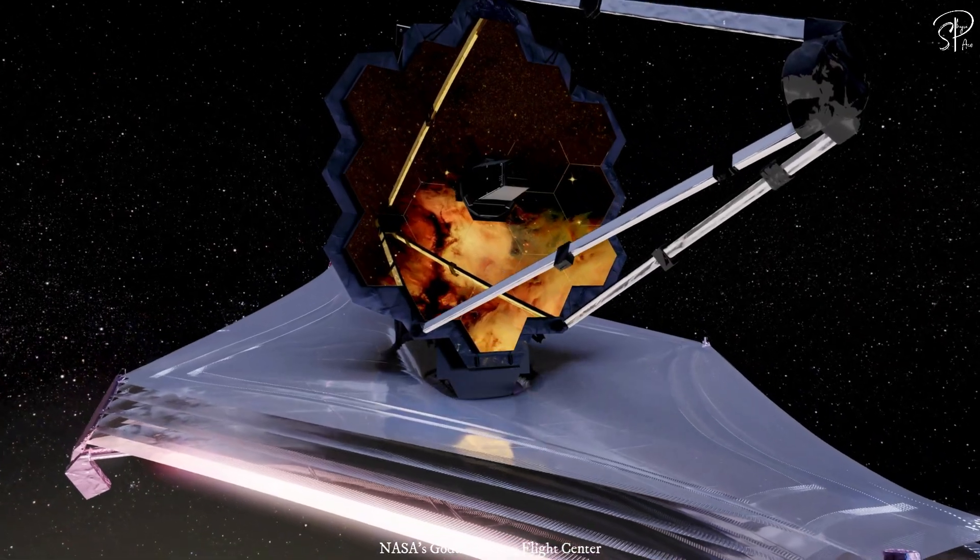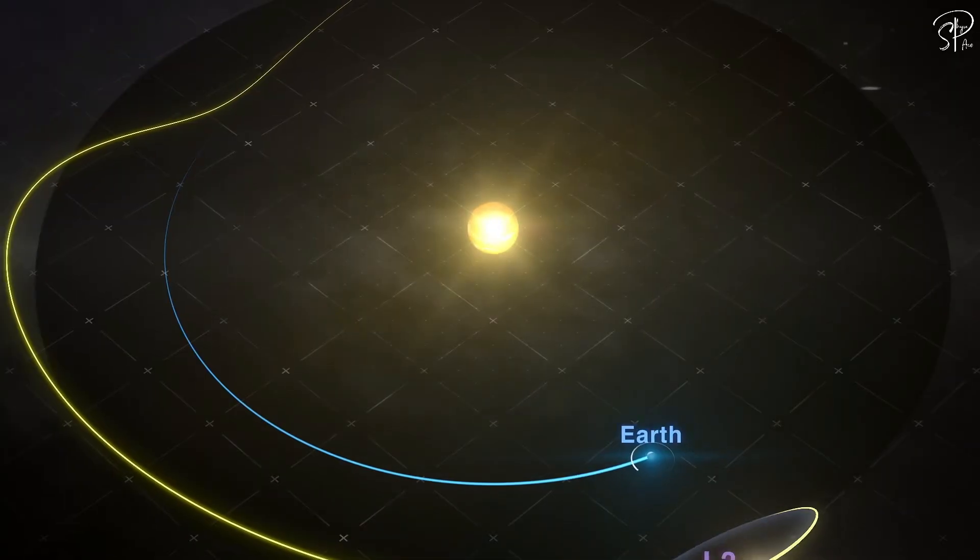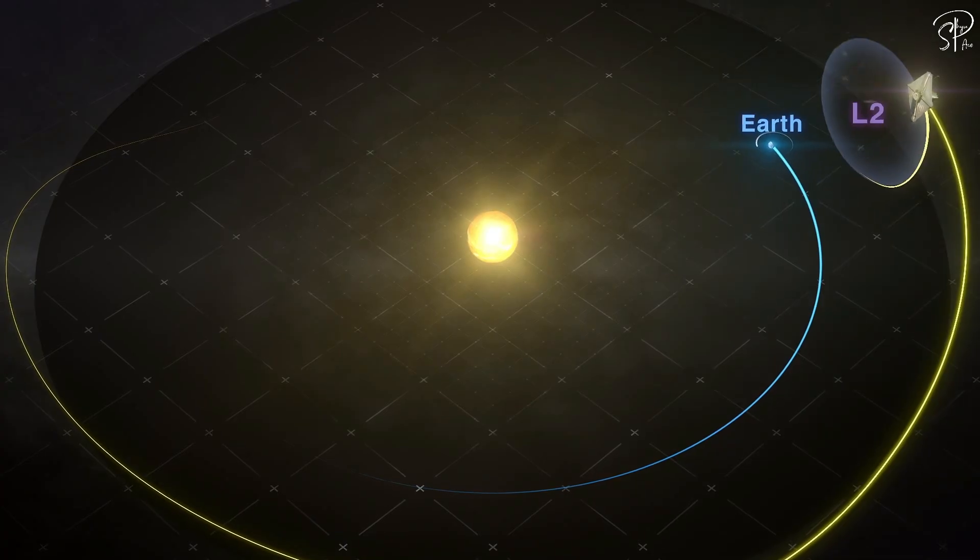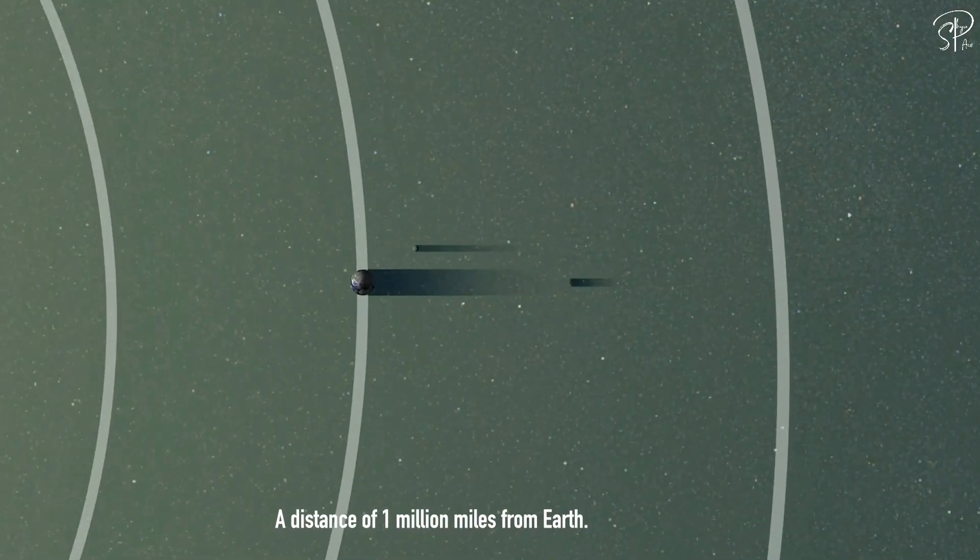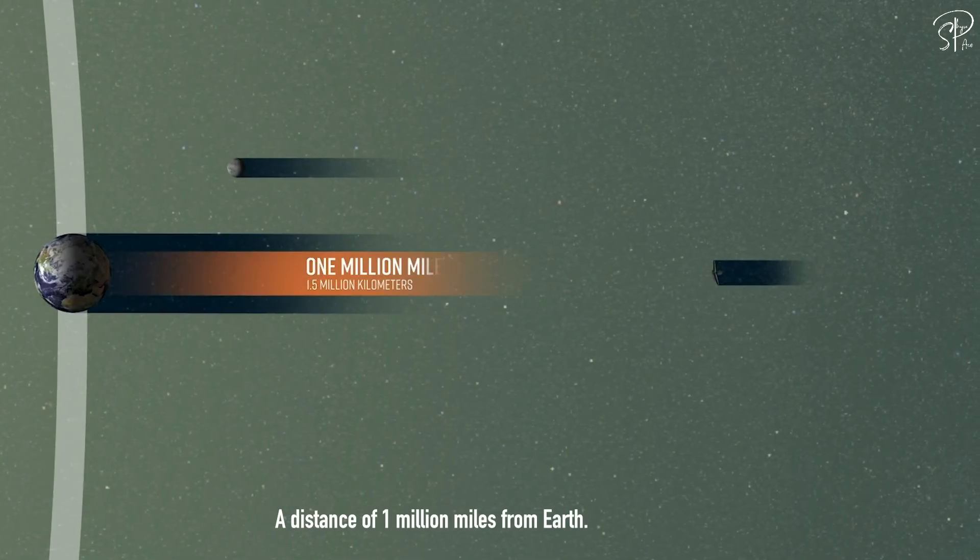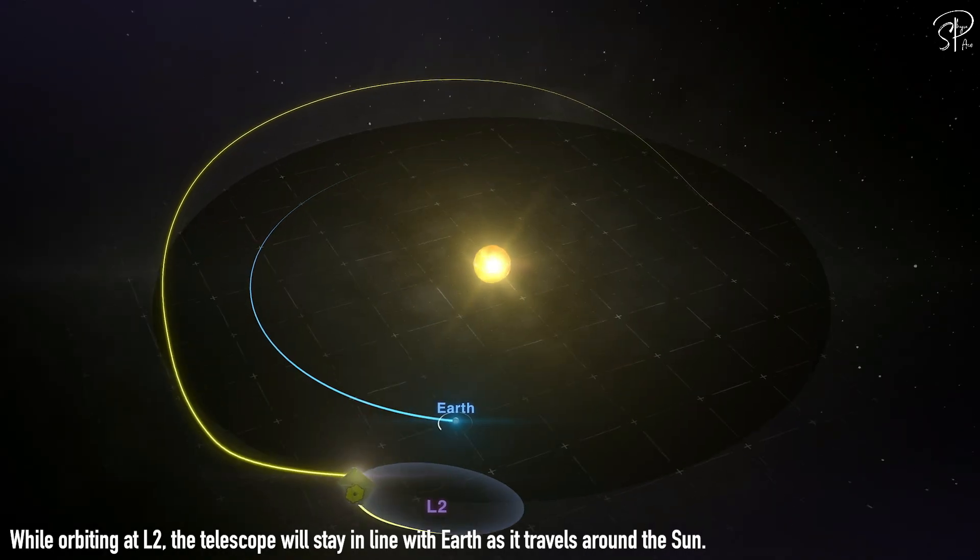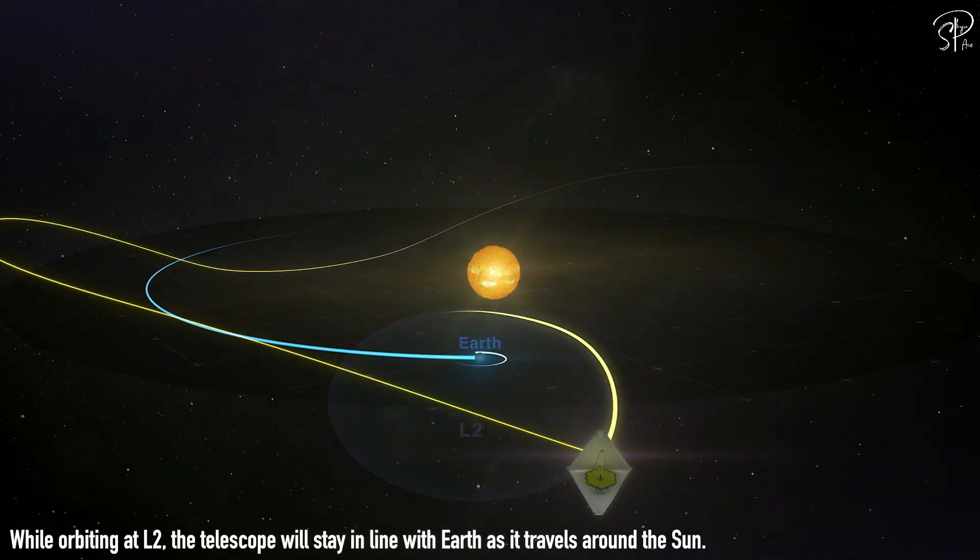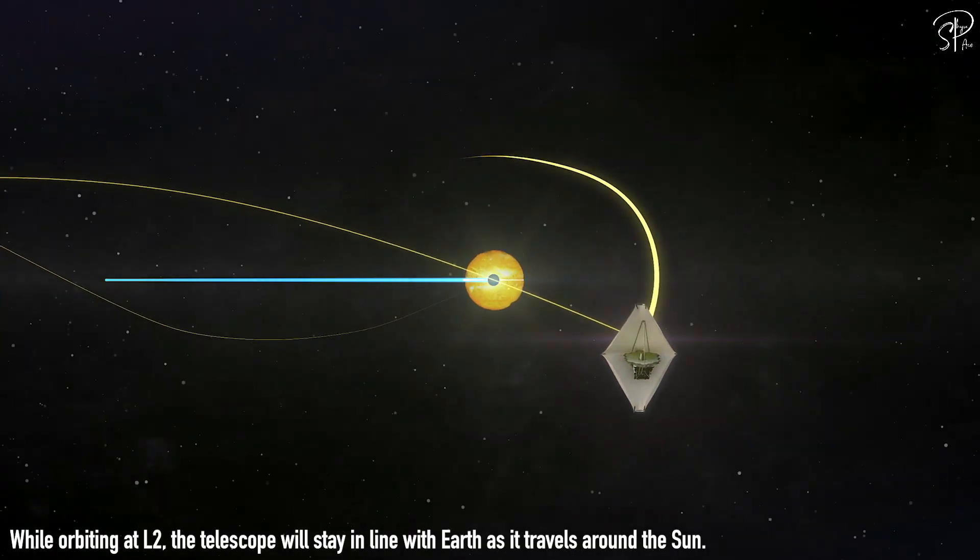Unlike Hubble, James Webb will not be placed in an orbit around Earth, but Webb will orbit the Sun near the second Sun-Earth Lagrange point 2, which lies approximately 1.5 million kilometers from Earth on the far side of Earth from the Sun. James Webb will not be located precisely at L2, but will move in a halo orbit around L2, as it orbits the Sun.